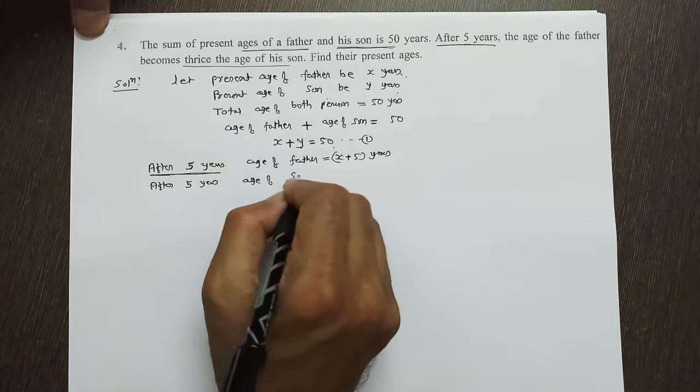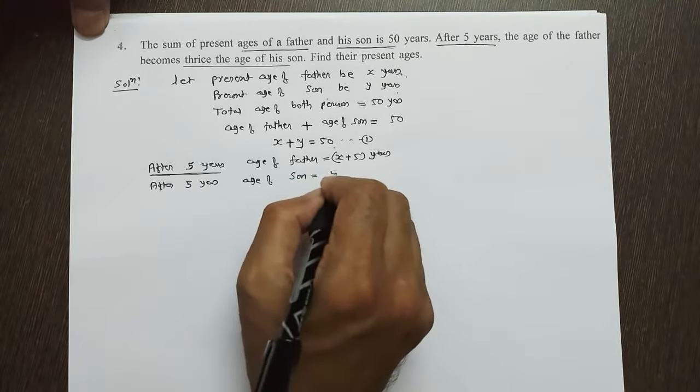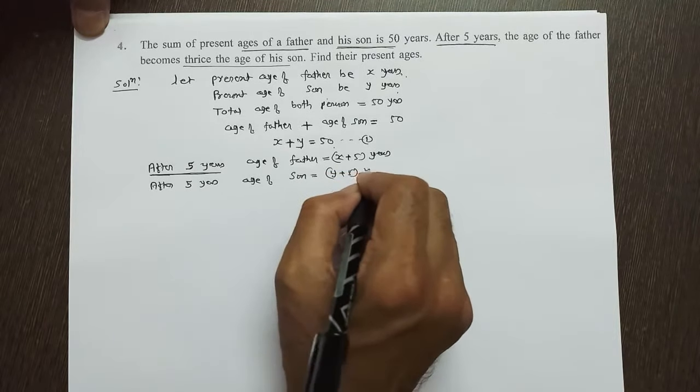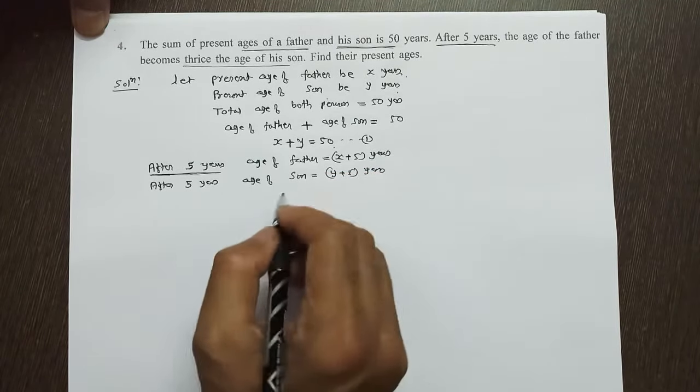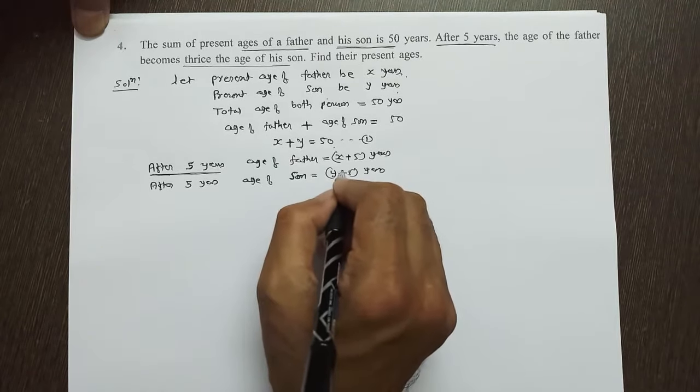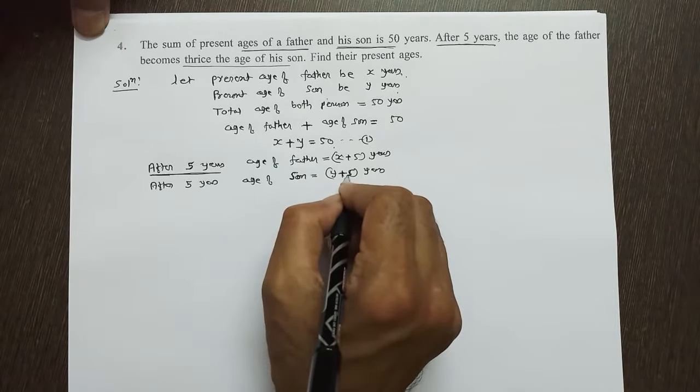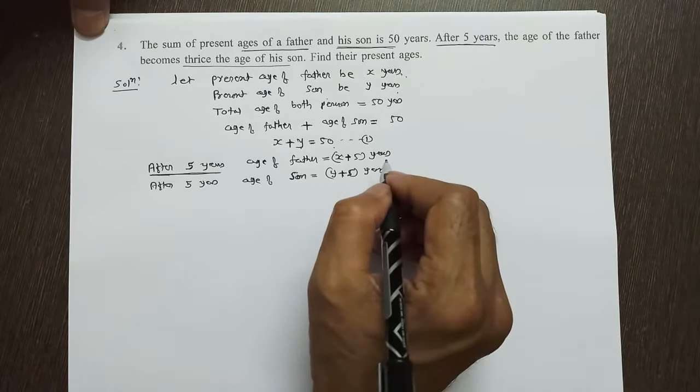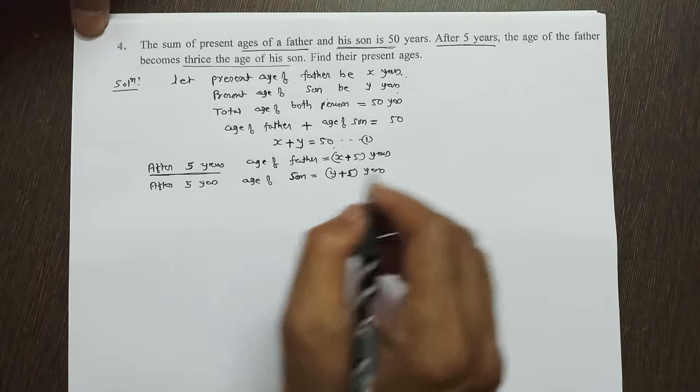Age of son equal to Y plus 5 years. After 5 years, it becomes thrice age of son.